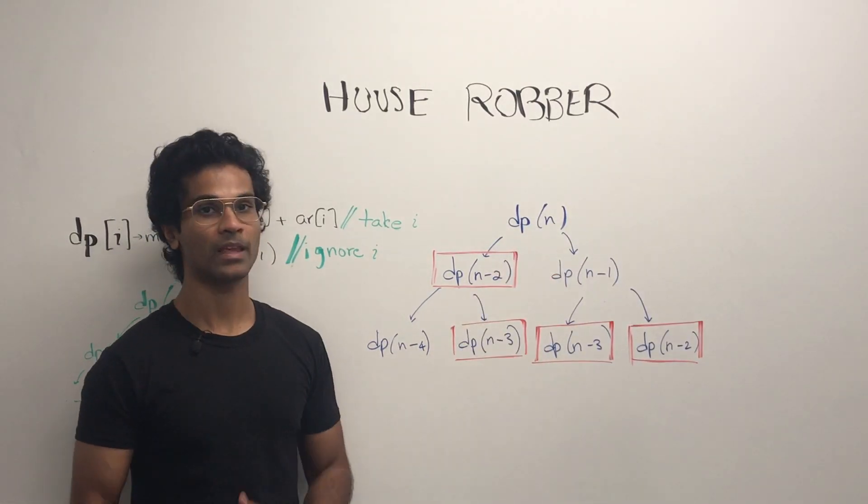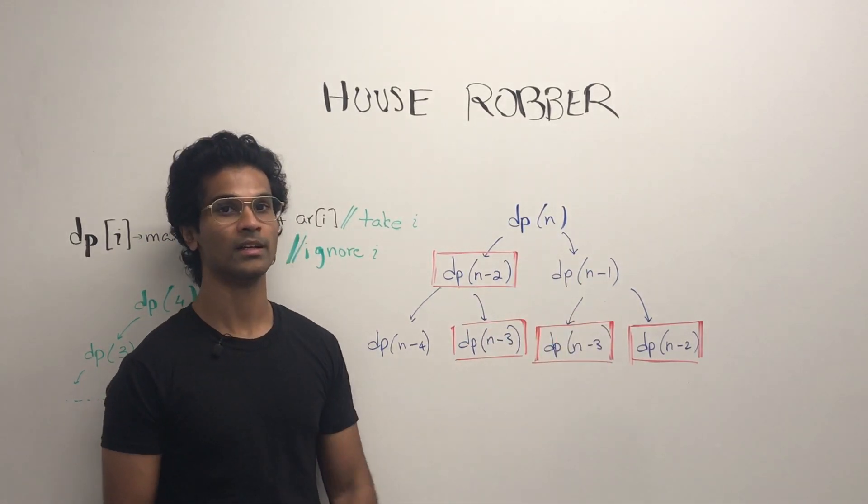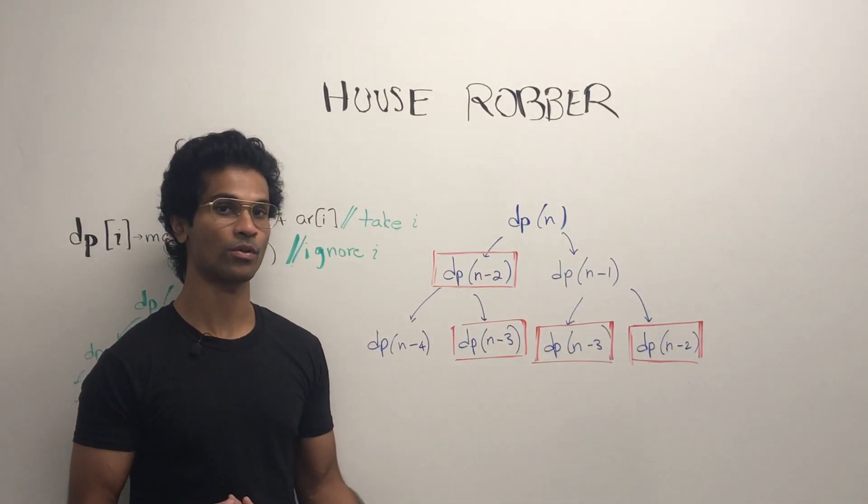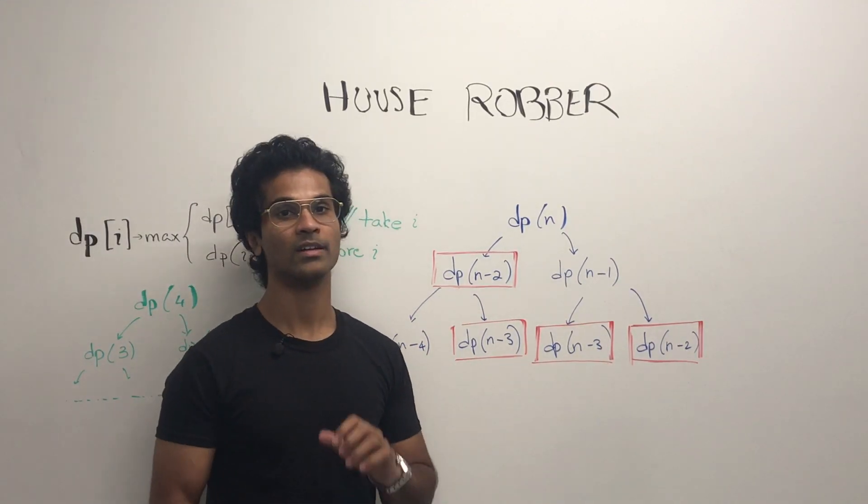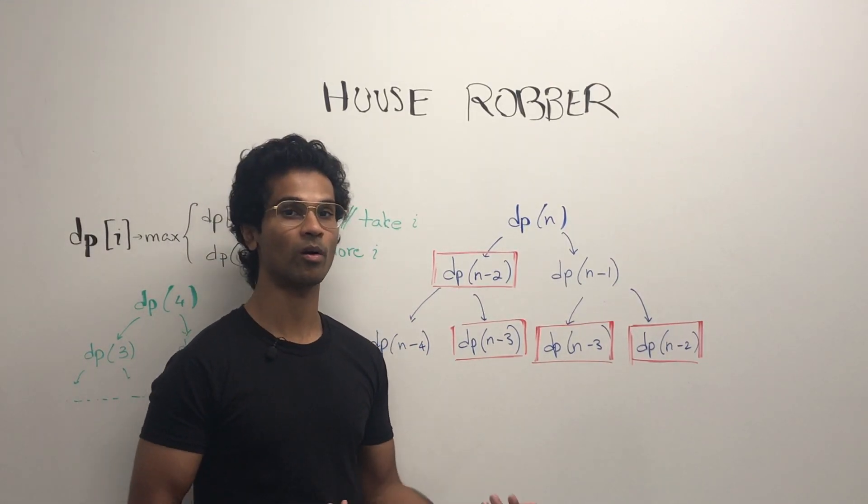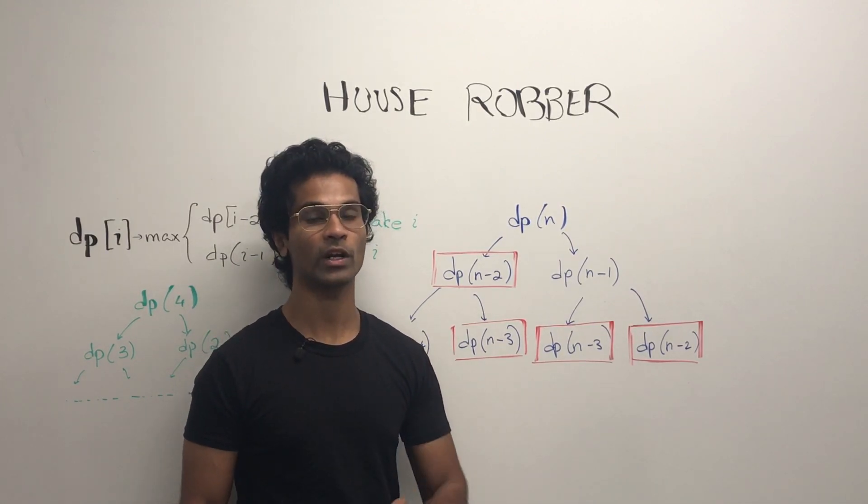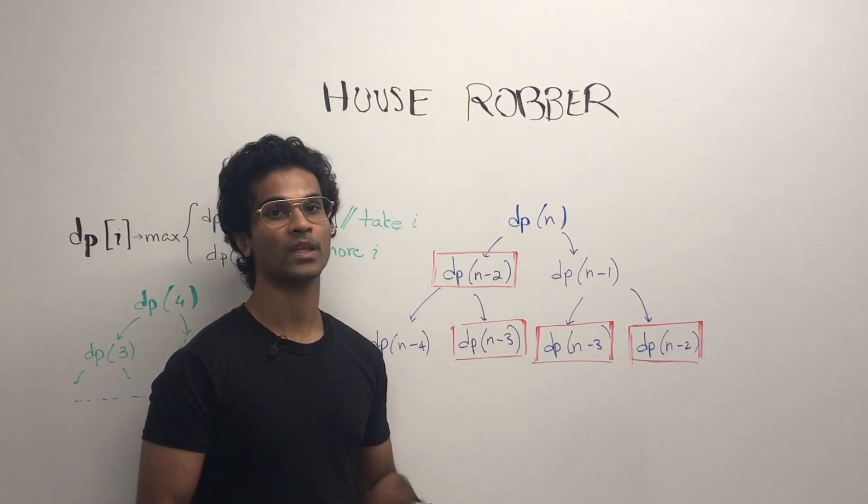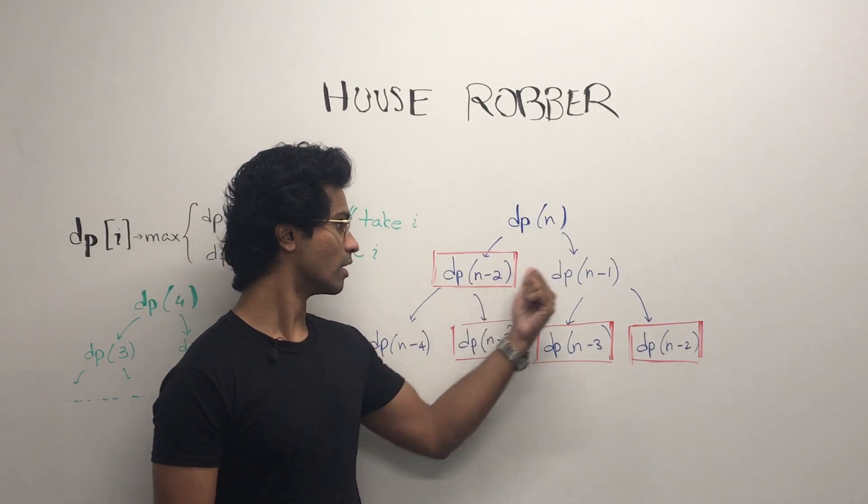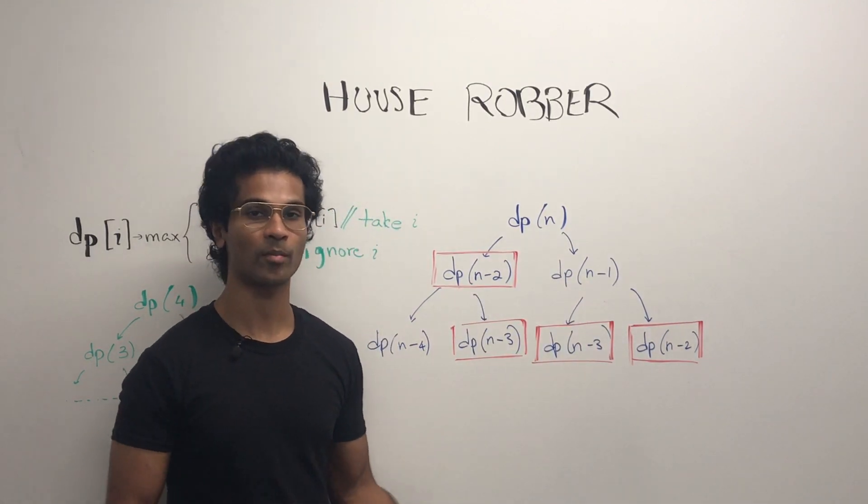Here's a more generalized DAG. dp of n is going to ask for dp of n minus 2 and dp of n minus 1. Each of them is going to ask for their own thing. So dp of n minus 4, n minus 3, n minus 3, n minus 2. Now you see these subproblems are what we call overlapping. They're repeating. So we're going to cache them when we do the top-down memoization approach. Each call of dp is calling two different dp calls. Keep that in mind when we look at the time complexity later.